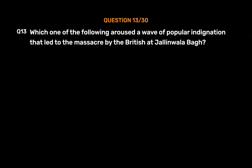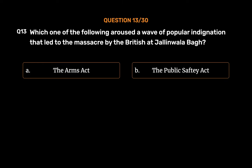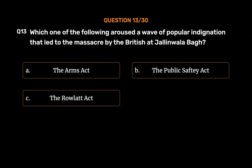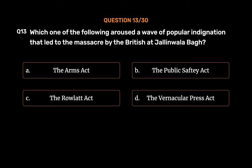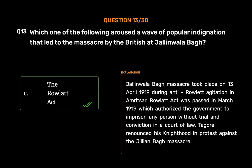Question No. 13. Which one of the following aroused a wave of popular indignation that led to the massacre by the British at Jallianwala Bagh? Option A, The Arms Act; Option B, The Public Safety Act; Option C, The Rowlatt Act; Option D, The Vernacular Press Act. The correct answer is Option C, The Rowlatt Act. Jallianwala Bagh Massacre took place on 13 April 1919 during anti-Rowlatt agitation in Amritsar. The Rowlatt Act was passed in March 1919, which authorized the government to imprison any person without trial and conviction in a court of law. Tagore renounced his knighthood in protest against the Jallianwala Bagh massacre.